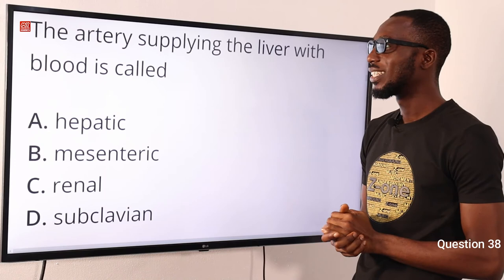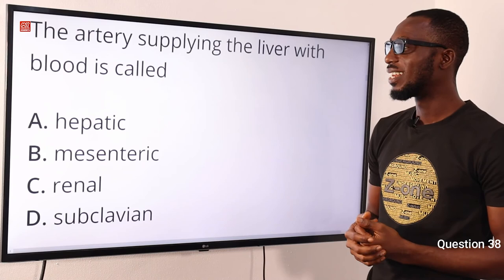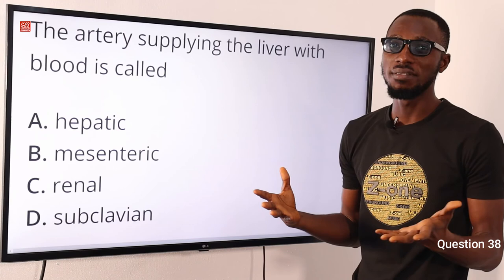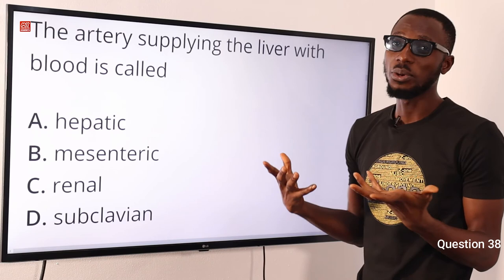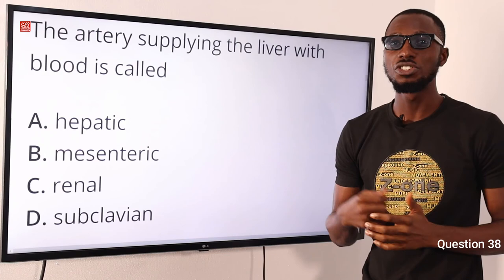Question 38: The artery supplying the liver with blood is called what? It is called the hepatic artery. The liver is the only organ that receives a double blood supply from the heart — the hepatic artery brings oxygen-rich blood to it, while the hepatic portal vein brings blood containing digested food from the gut. So the correct option is option A, the hepatic artery.